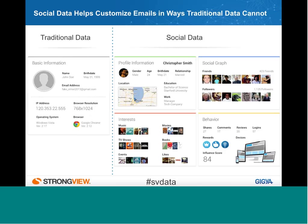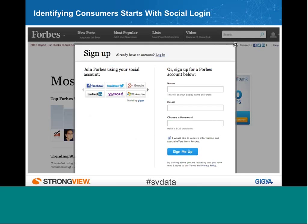You also get social graph data — who their friends are and what those friends are like — and even behaviors: on-site behaviors like comments, reviews, shares, what pages they visit, what they buy. All these different components represent the social identity. The way a business gets access to this comes down to a technology called social login.